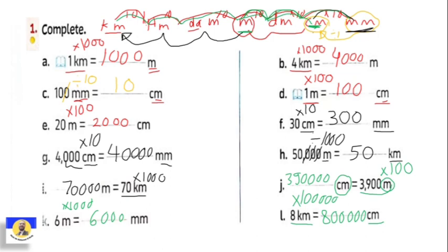Remember: if we want to convert from one unit to another, first make the stairs chart and memorize it well — kilometer, hectometer, decameter, meter, decimeter, centimeter, and milli. If we change from greatest to smallest, we multiply. From smallest to greatest, we divide.